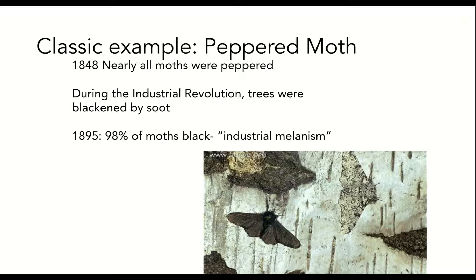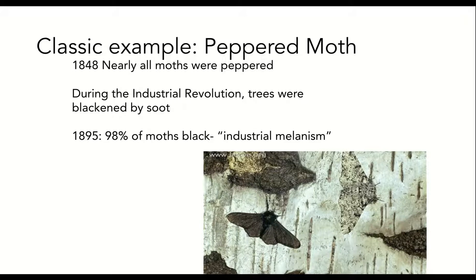By the end of the 19th century, there were very few of the peppered variants within the population, and they had been replaced by a boom in the population of dark morphs. This change had to do with environmental pollution — namely the soot spewing out of coal-burning factories during the industrial revolution. As a result, even the bark of trees was covered in soot and appeared to be black, which enabled the dark morphs to have protection from predators.